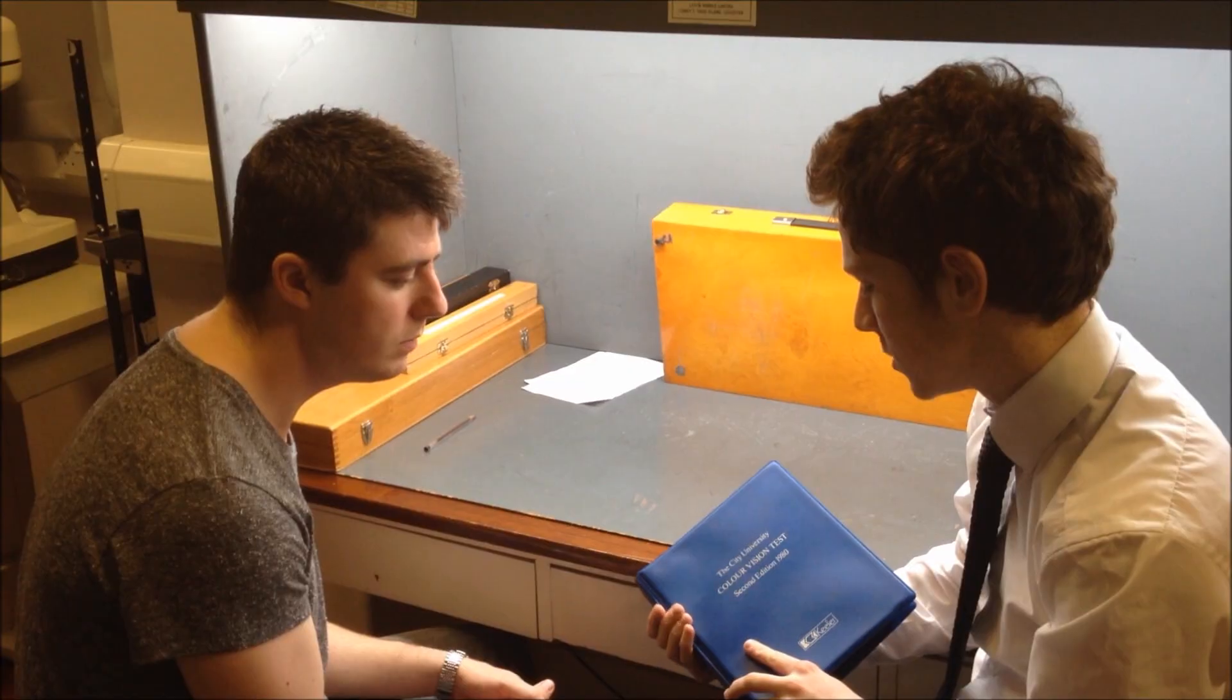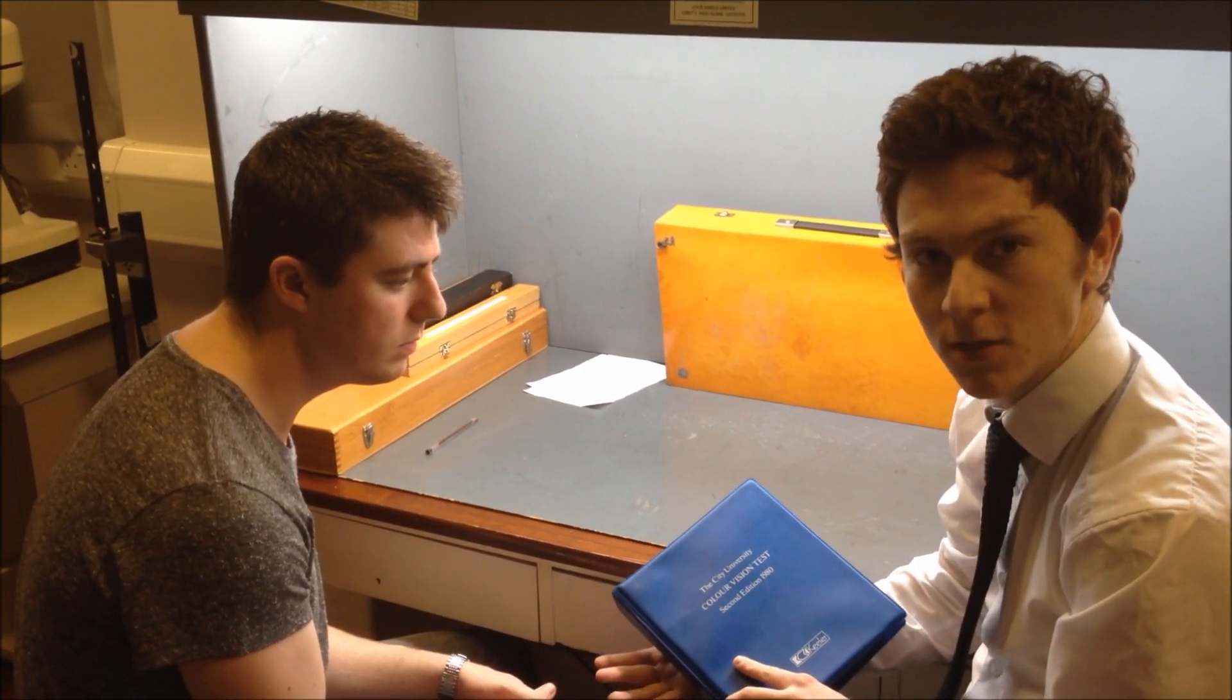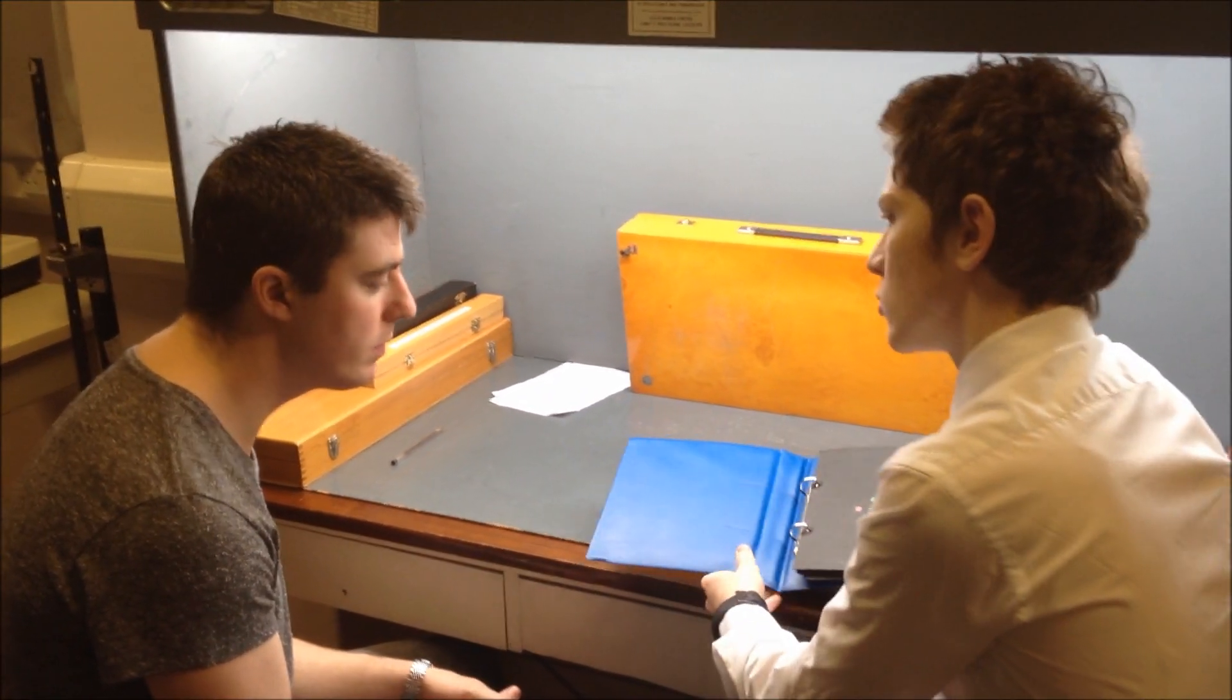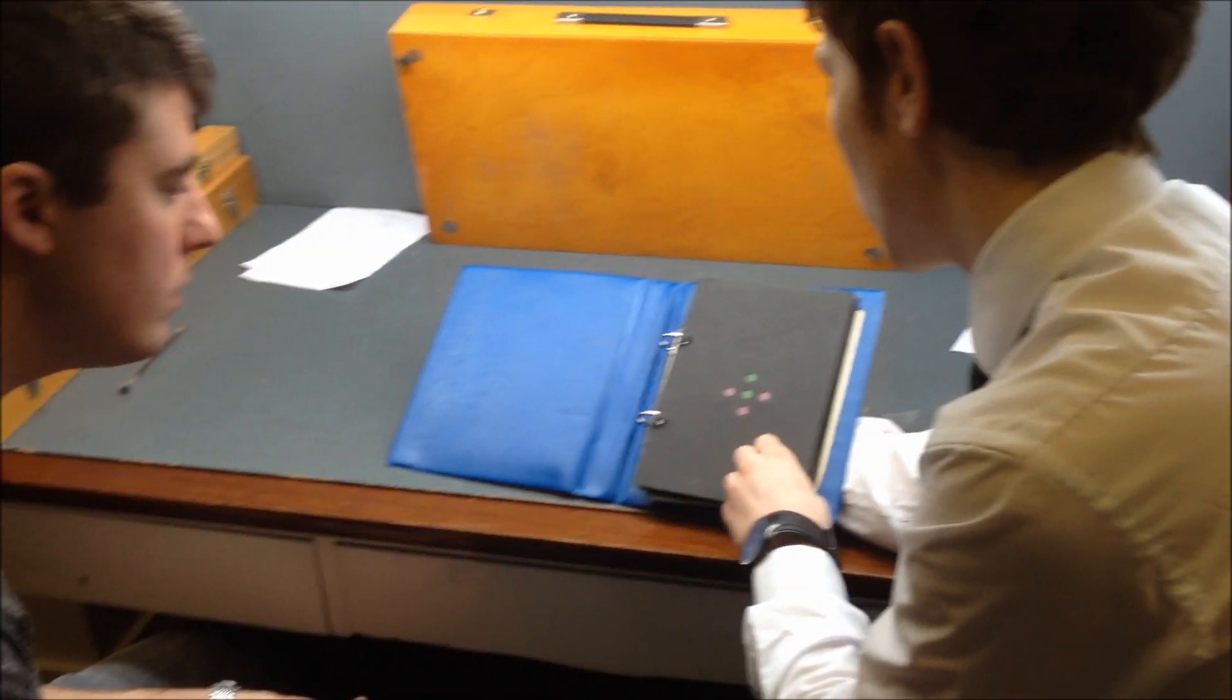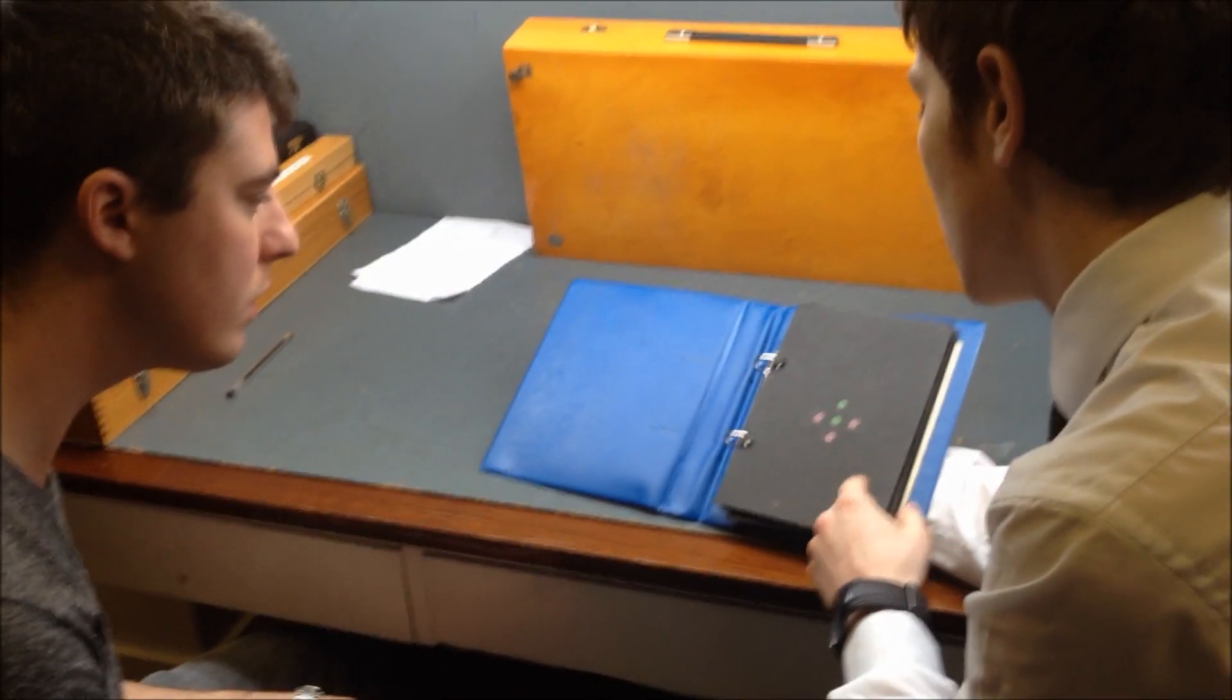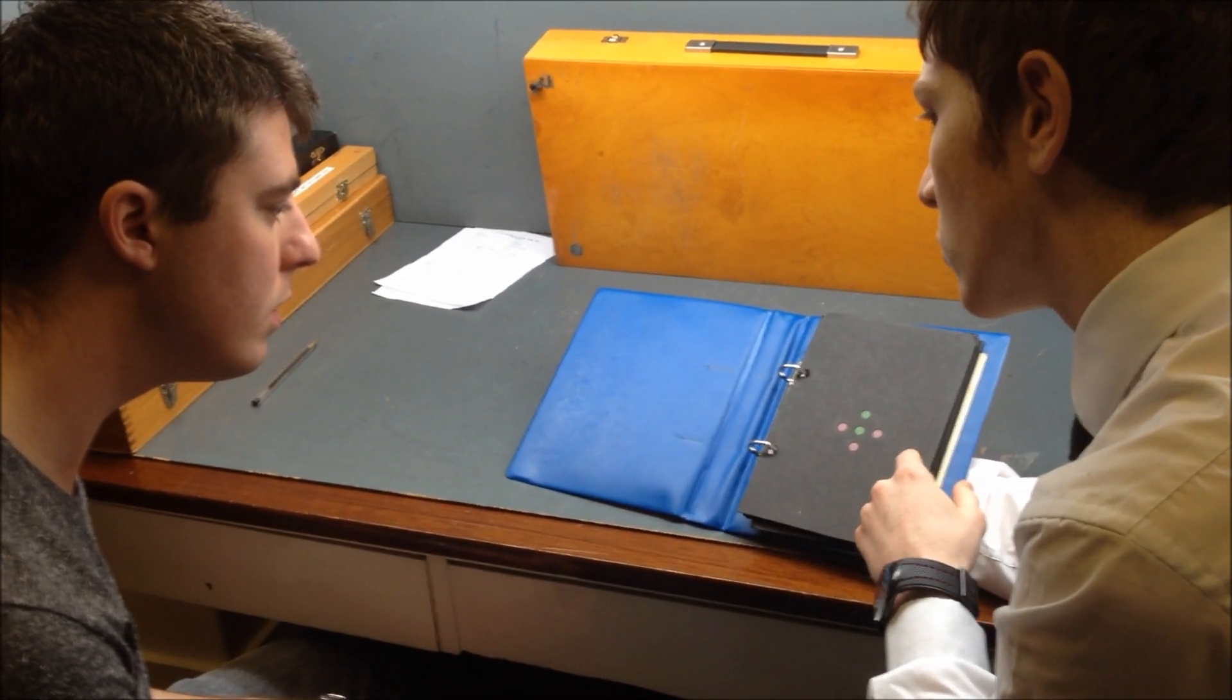Thomas is now going to do the City University color vision test with us today. So what I'm going to ask you to do is, you'll see the four colors around the one in the middle. So without touching, I want you to tell me which color in the periphery is closest to the one in the middle.